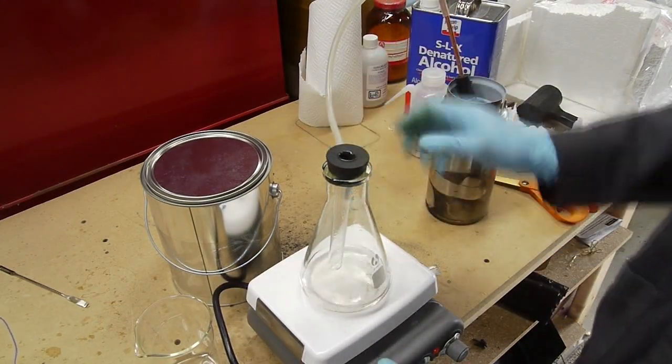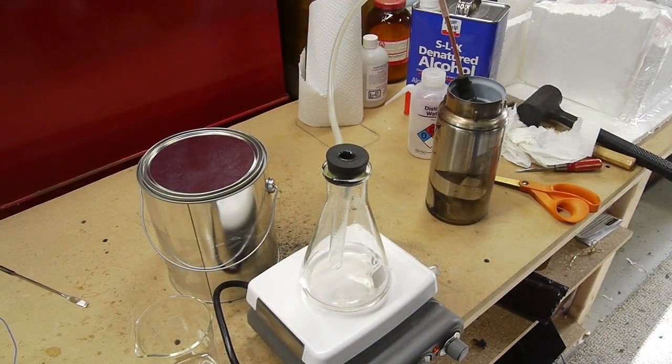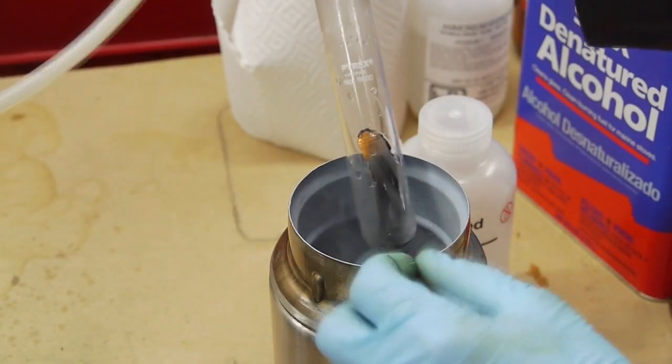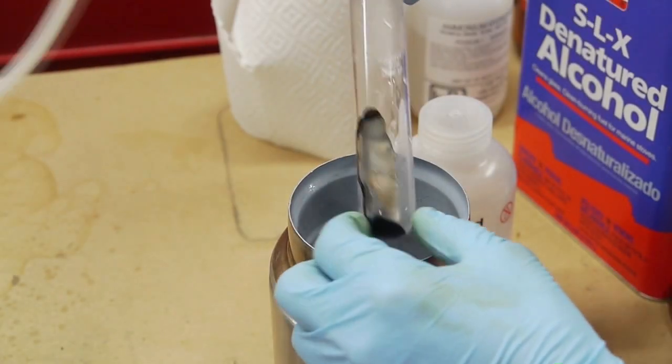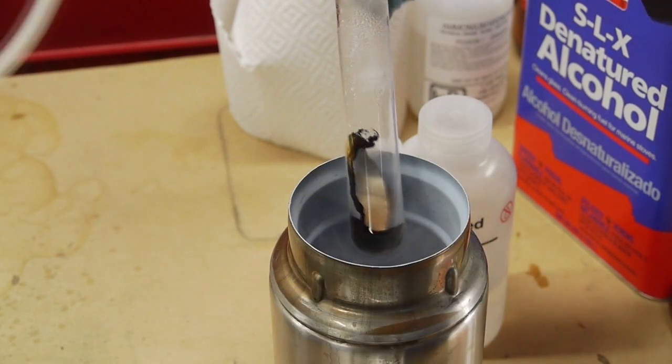So the ammonium hydroxide is about 30% ammonia by weight, I think. And when you heat it up, the ammonia gas comes off of it. So this is hardly purely anhydrous. The ammonium hydroxide, when you heat it up, also lets off a lot of water vapor.